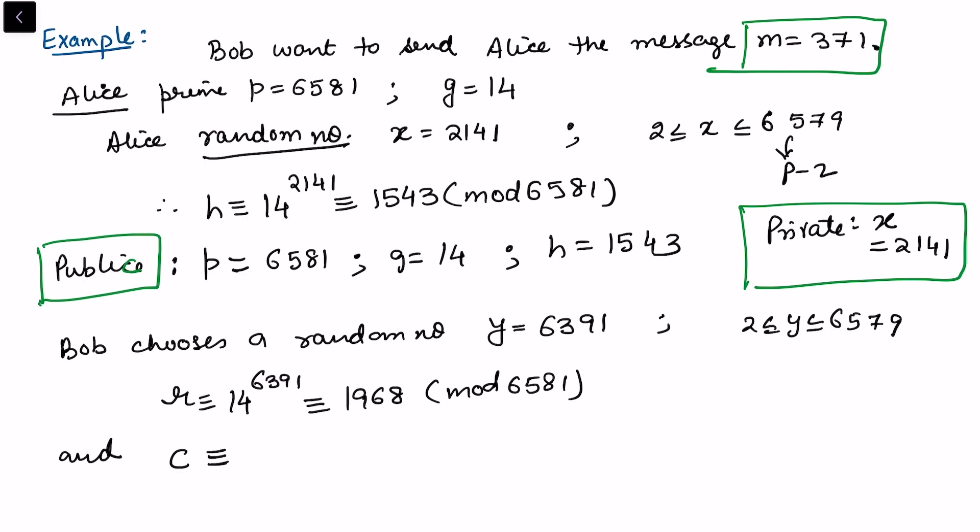And c is congruent to h^y times m. So we already know what is h. h is public, we'll take it from here: 1543^6391 multiplied by the message, that is 371, mod 6581. So we solve this thing. First we reduce this exponent and multiply and find it in the reduced form with respect to mod 6581. We get 6205 mod 6581.